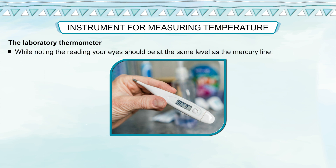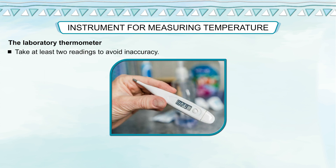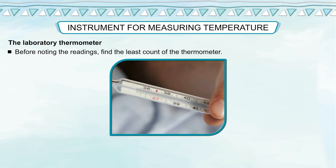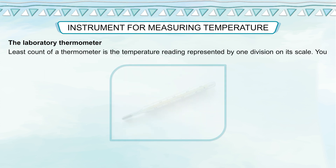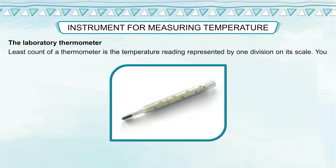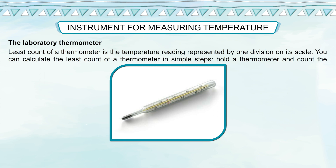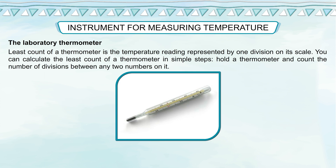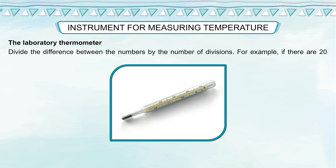While noting the reading, your eyes should be at the same level as the mercury line. Take at least two readings to avoid inaccuracy. Before noting the readings, find the least count of the thermometer. The least count is the temperature reading represented by one division on its scale. To calculate it: count the number of divisions between any two numbers, then divide the difference between the numbers by the number of divisions. For example, if there are 20 divisions between 10°C and 20°C, the least count will be 10÷20 = 0.5 degree.